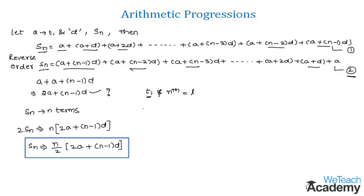The series of the arithmetic progression as a plus a plus d plus a plus 2d plus so on would be l minus d plus l.